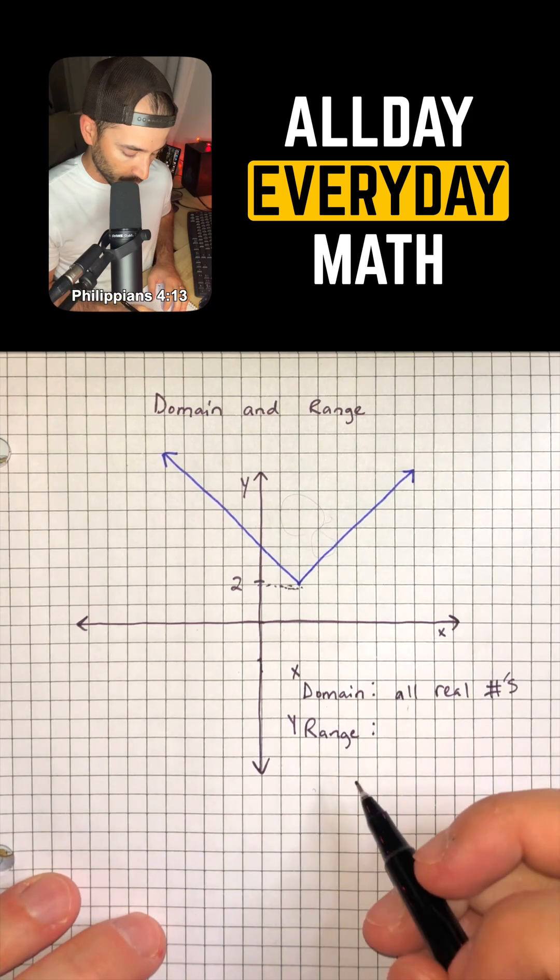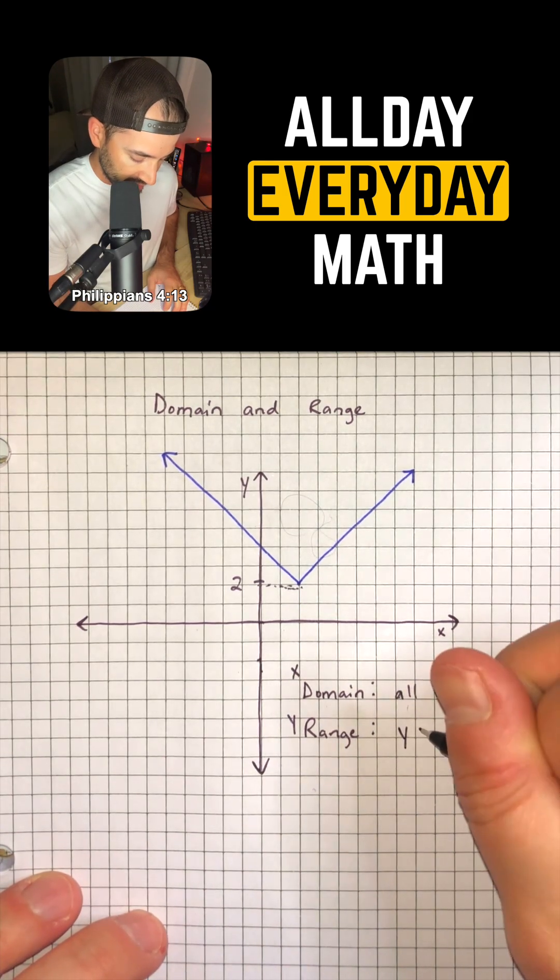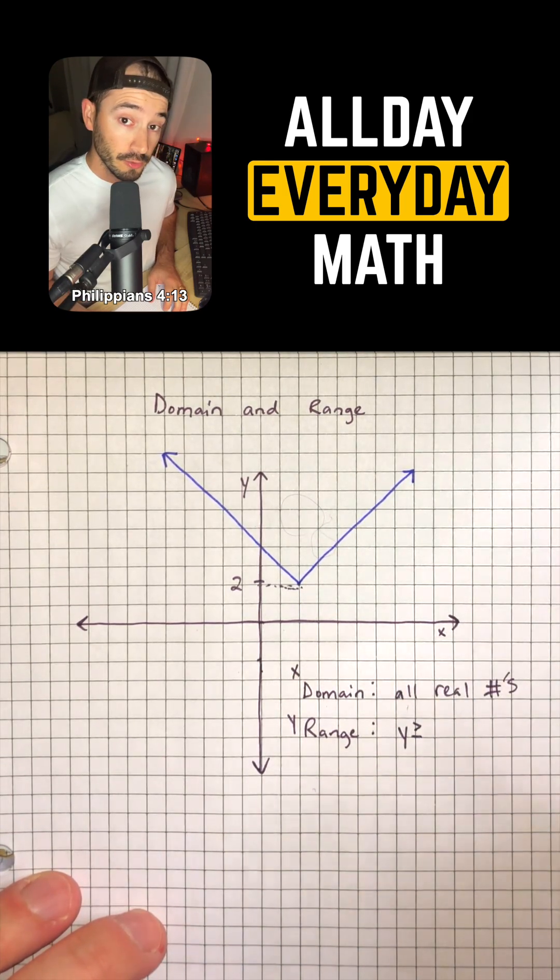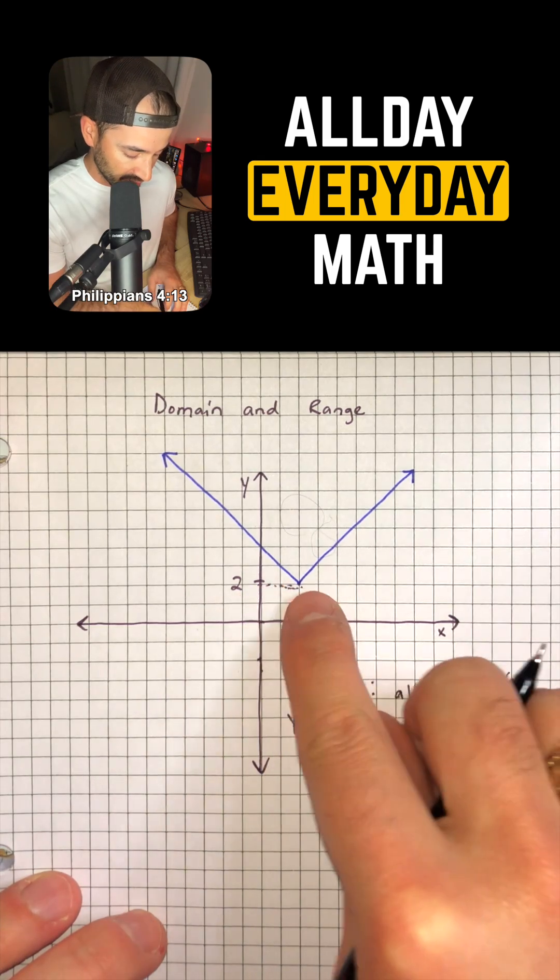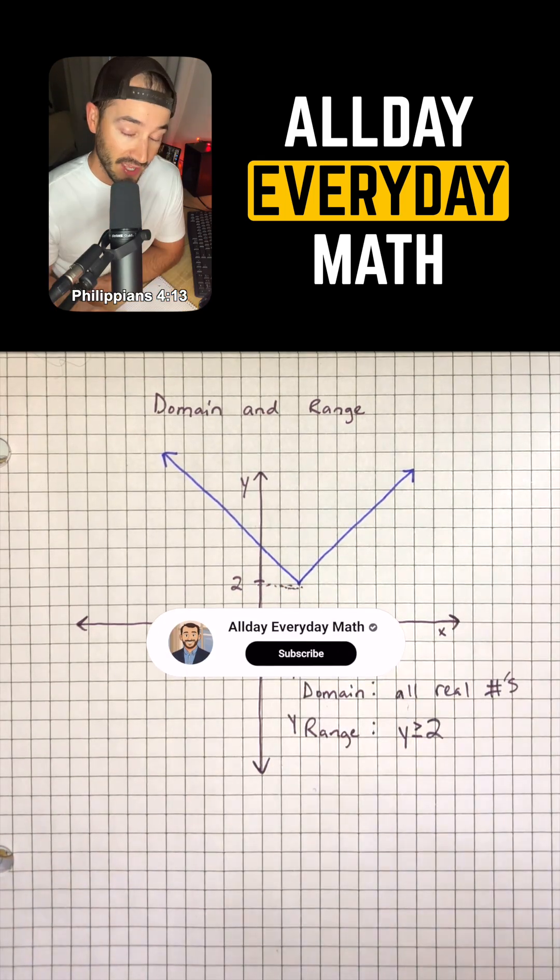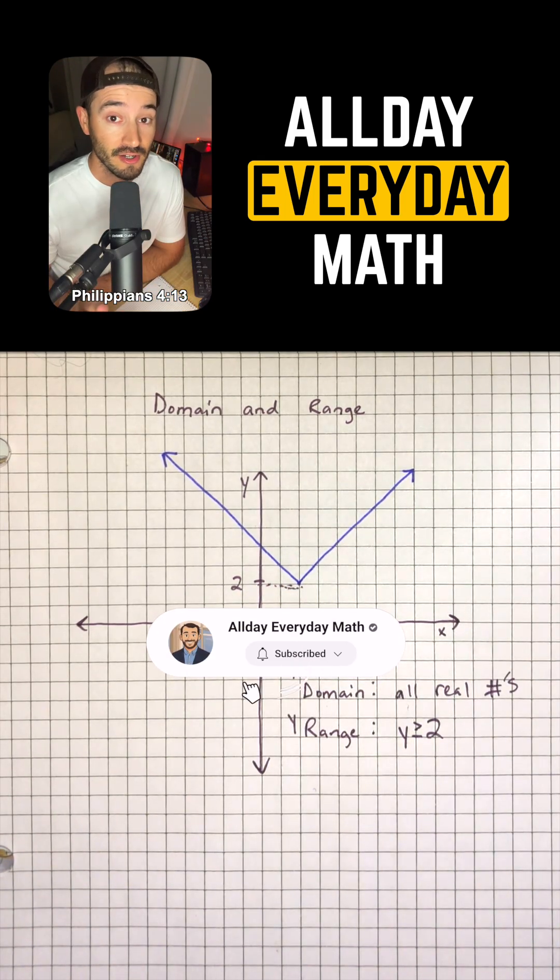Another way of writing that is that our range is Y is greater than or equal to, because it does touch that 2, positive 2. And so that's how you do domain and range, and that's all you have to do.